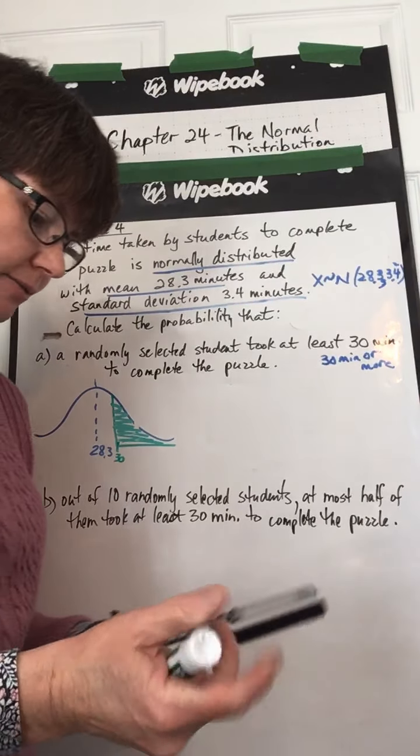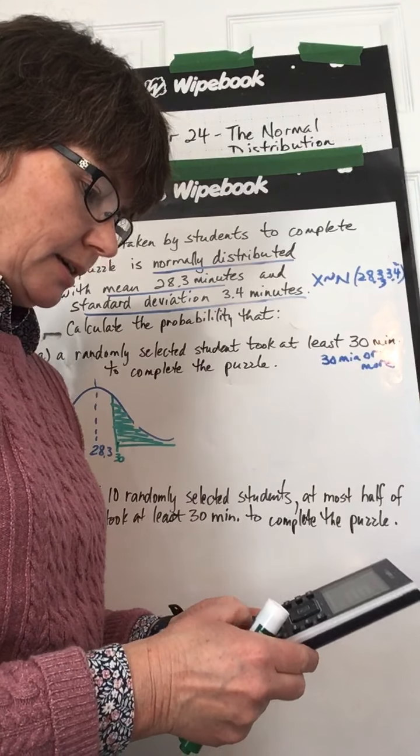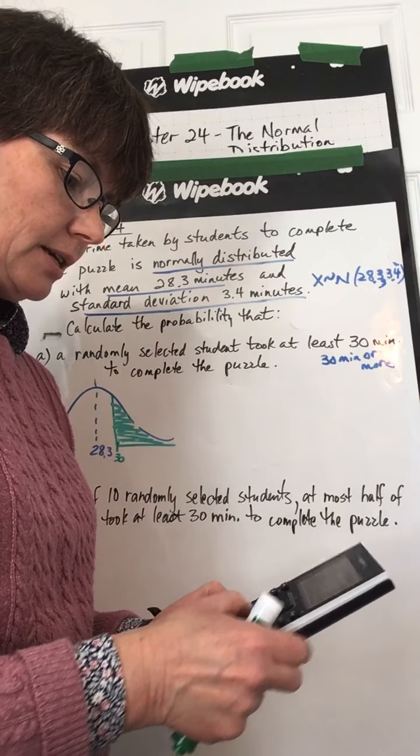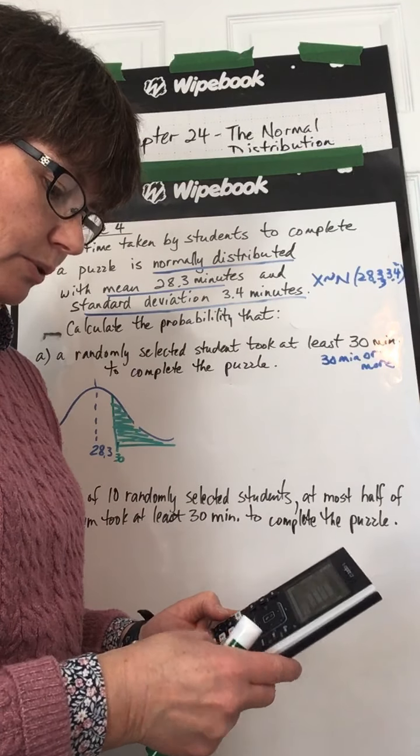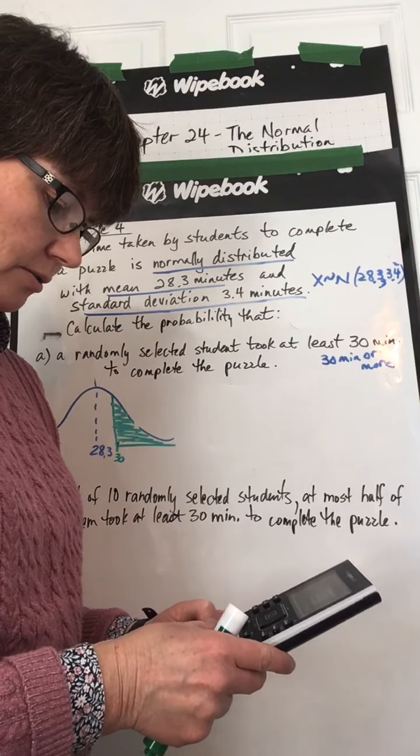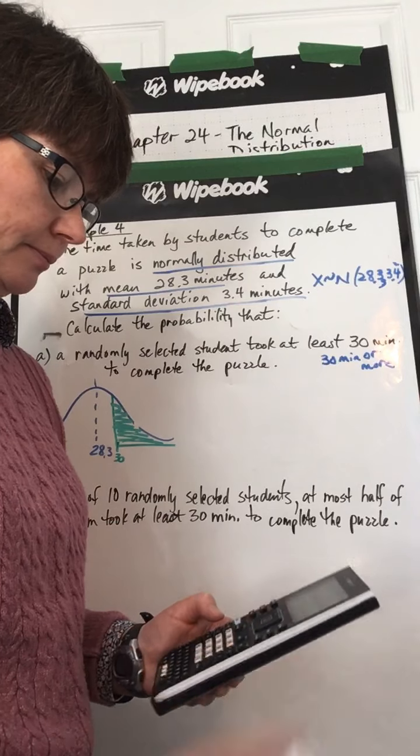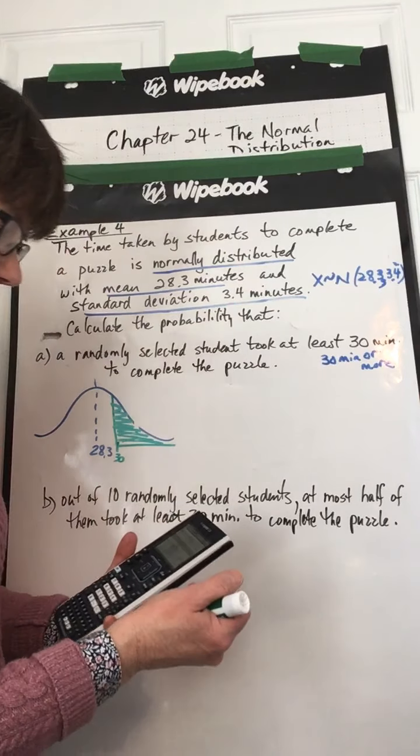Upper bound is infinity, so the 9 times 10 to the power of 999. The mean, 28.3, standard deviation, 3.4. Press OK. 0.30.